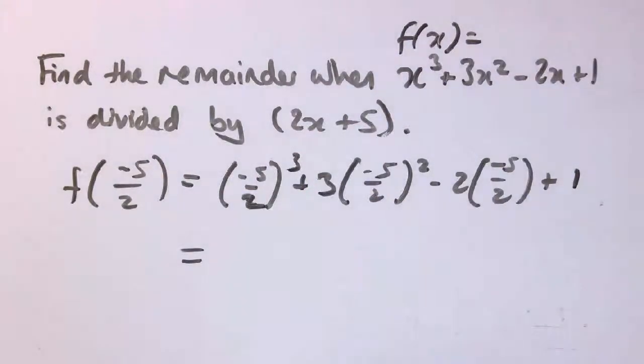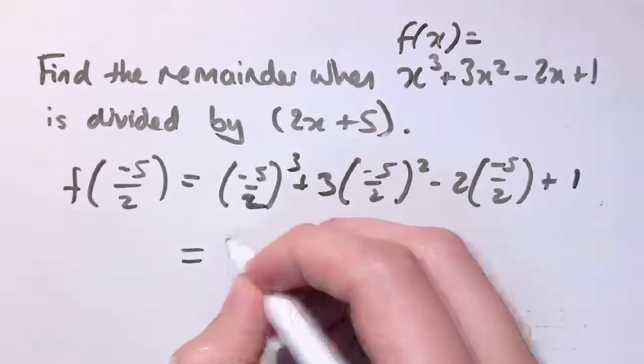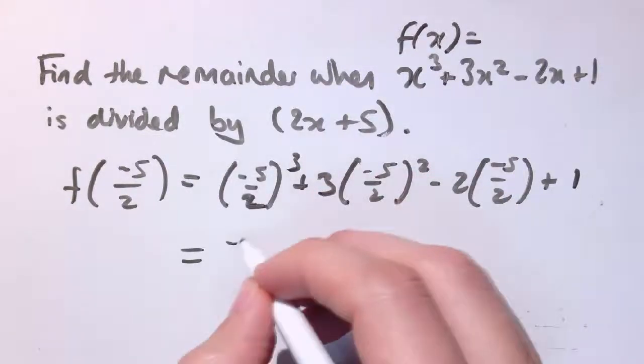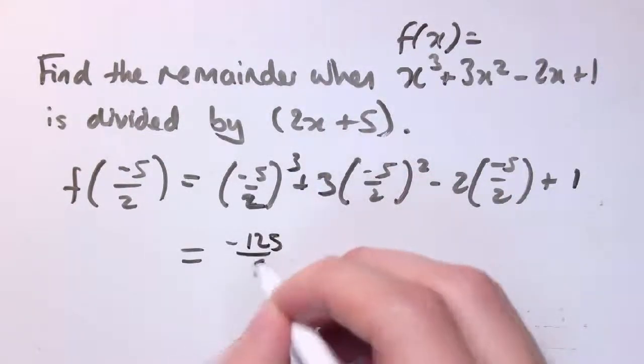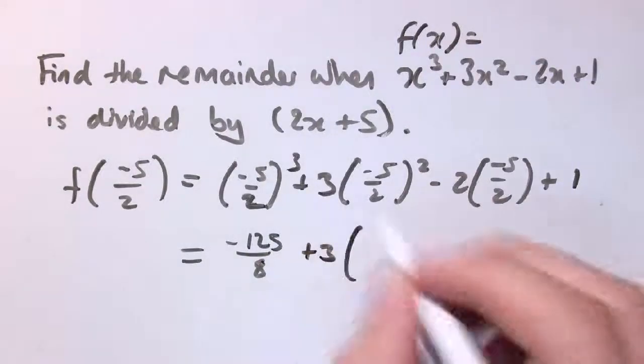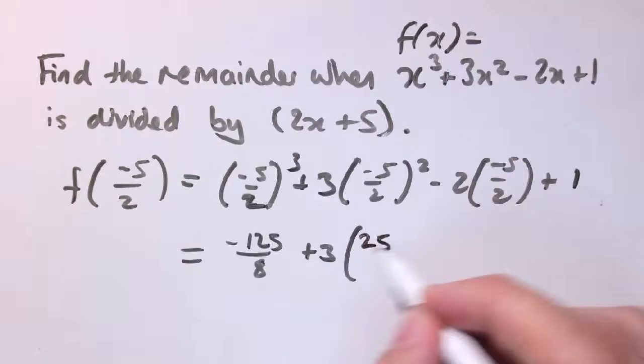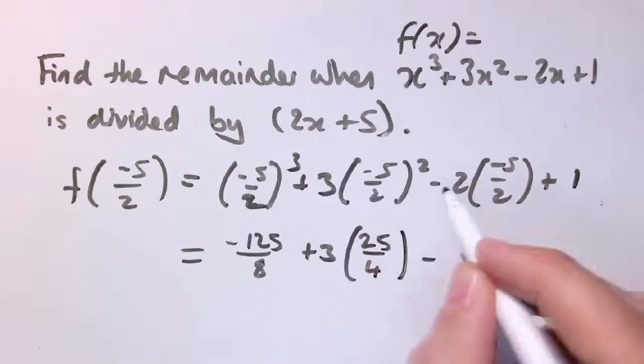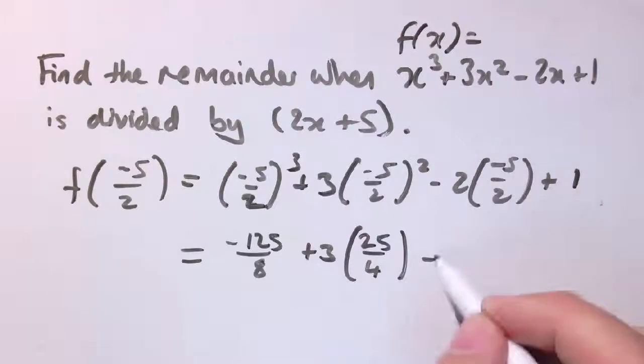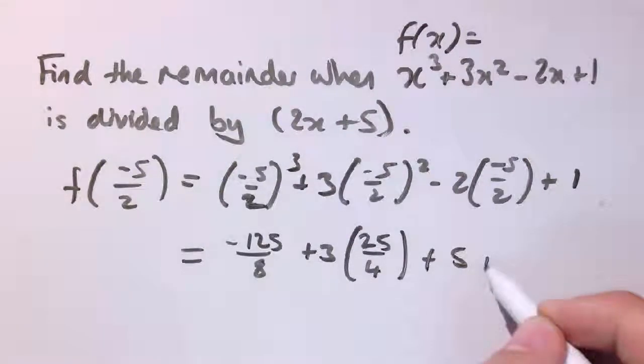Although I wouldn't necessarily do this every time, it's a good exercise. So minus 5 over 2 cubed, that's cube the top, cube the bottom, so minus 125 over 8, plus 3 times minus 5 over 2 squared. This is going to be positive - square the top, square the bottom. Minus 2 times minus 5 over 2, the minuses cancel with the 2 to leave plus 5, and then plus 1.